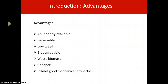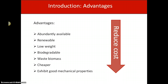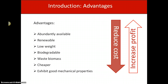Natural fibers are also biodegradable — they can be degraded biologically. They represent waste biomass, so indirectly we can manage our biomass. They are cheaper and also have reasonably good mechanical properties. These advantages are really significant to industry because they can reduce the cost of using conventional fibers and, of course, when cost is reduced, profit increases.